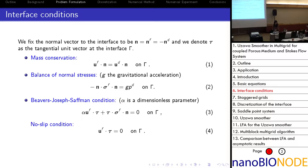We need interface conditions connecting these two parts. To describe them, we fix a normal vector and a tangential vector tau at the interface. Across the interface, continuity of mass and normal stresses must be guaranteed, giving rise to the first two conditions. Additionally, the Beaver-Joseph-Saffman condition is also considered. It has been widely used and supported by numerical experiments, and it describes the relation between the tangential velocity and the flow stresses. If we neglect the second term in this condition, we have a no-slip condition, which is much easier.